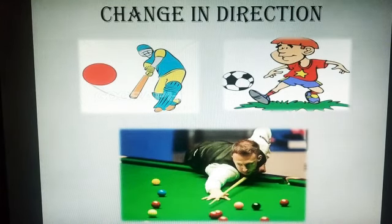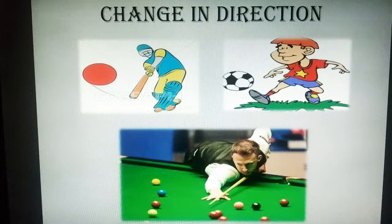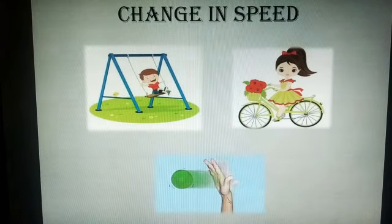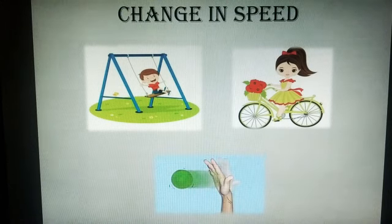Force can also change the direction of motion. When a batsman hits the ball with his bat, the direction of the moving ball changes — it deflects from its original direction. Similarly, when a player kicks the football, it deflects from its direction. In the game of snooker, when the cue ball is hit, it gets into motion and hits other balls, changing their direction — all the balls change their direction of motion and deflect from their path. These are some examples of force changing the direction of motion.